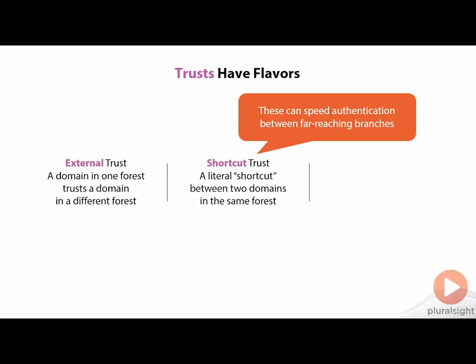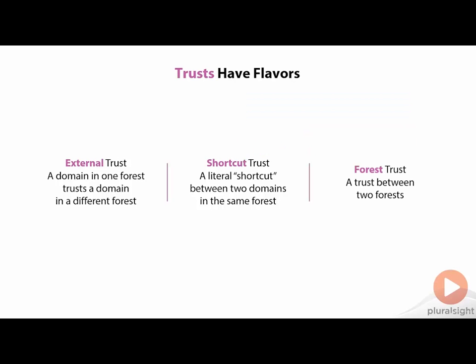Shortcut trusts are required to speed authentication between far-reaching branches of an existing forest — that's the whole reason for their existence. A third type of trust, similar to the external trust but very specific, is a forest trust. A forest trust is a trust that exists between two forests, and very specifically it exists at the root domain of those two forests. If I need to connect two forests together, I can do so with a forest trust right at the top between the two root domains. This forest trust is transitive, which means it allows all the domains in either forest to authenticate with each other. It is the most common type of trust that you see created today.